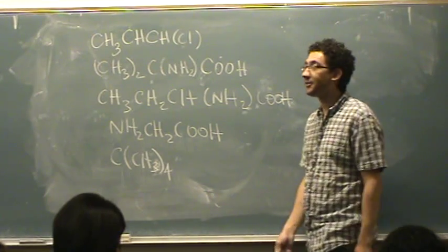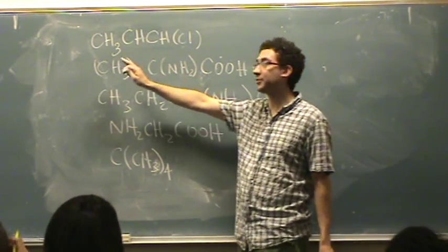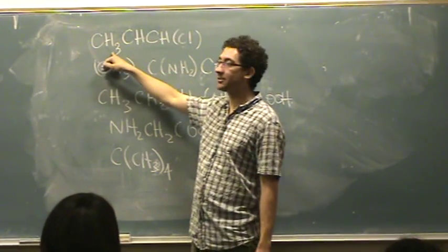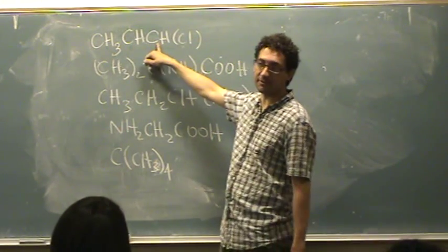It could be helpful to draw these out, but you're going to see this one doesn't have a carbon with four different things on it. This has three hydrogens. This only has three different groups on it. This one has three different groups on it.